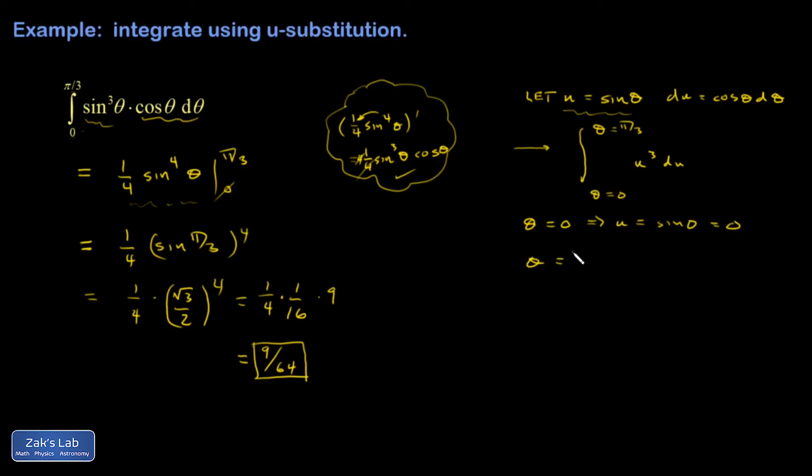When theta equals pi over three, u is going to be the sine of pi over three, which is root three over two. So my integral is now transformed permanently. I don't have to ever think about theta again.